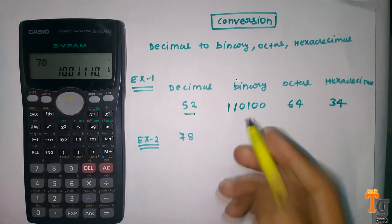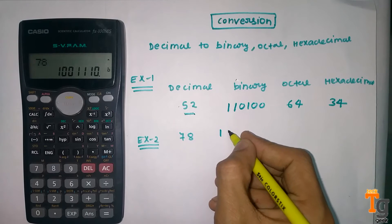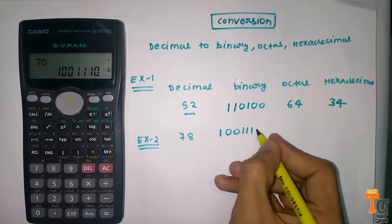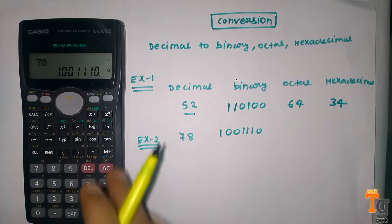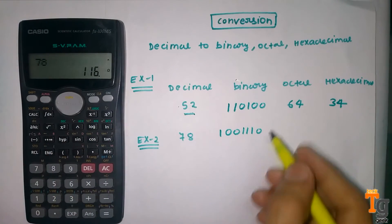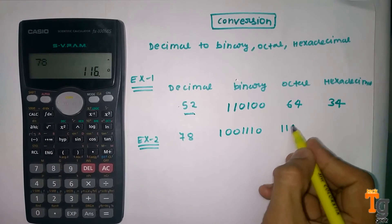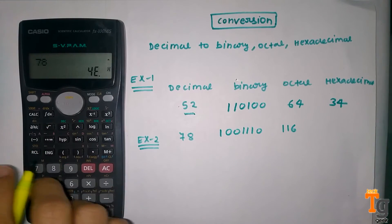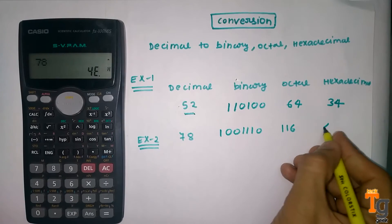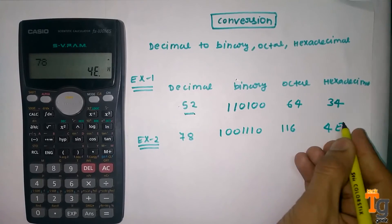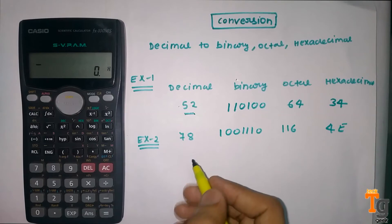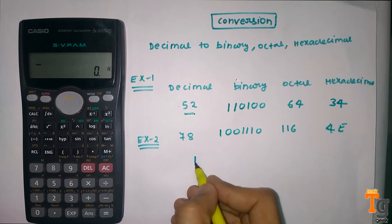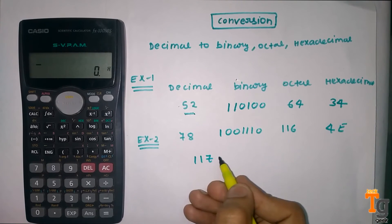For binary you can simply press binary — here you can see the answer 1 0 0 1 1 1 1 0. For octal you simply press octal and this is your octal value. For hexadecimal you simply press hex and this is your hexadecimal value. Now if you want to convert an octal number like 117 into decimal form...